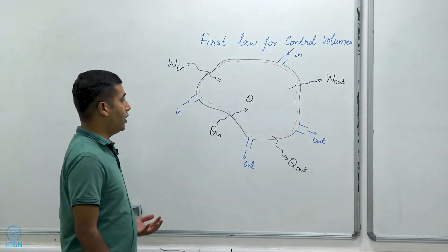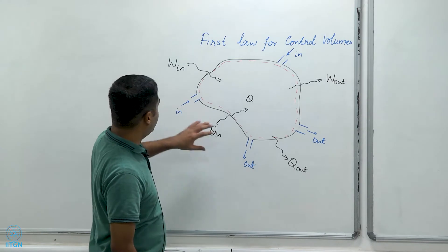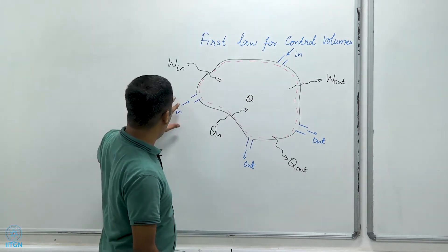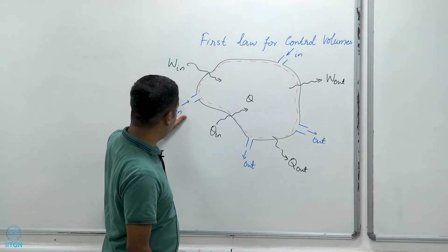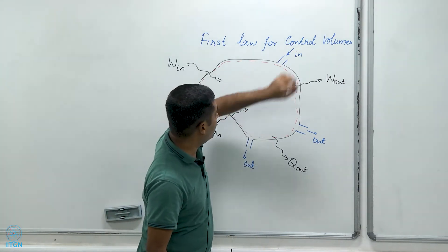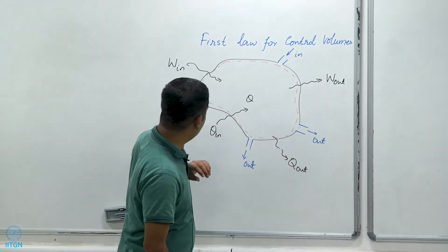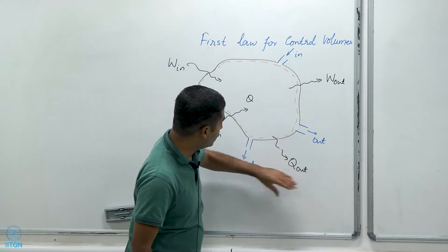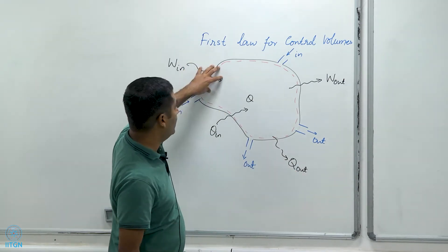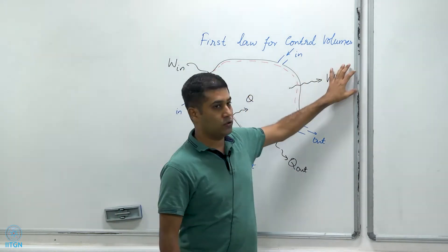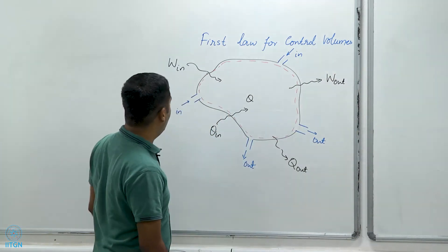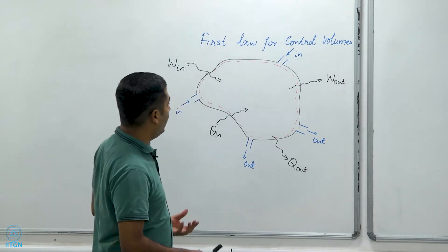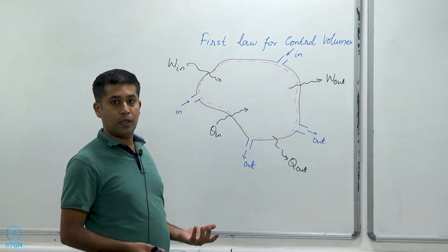It may have more than one inlet or more than one exit. For example, in this system shown by the red dashed line, I can have mass coming in at this location and at this location, mass going out here and here. There is some heat entering the system here, heat leaving the system here, heat entering here, work entering here, and the system is doing work on the surroundings there. This is a general form of a system that can have multiple interactions going on at the same time.